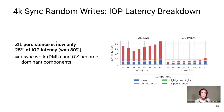Looking deeper at latency distribution, with zilpmem the ZIL persistence now only takes about 25% of wall clock time per IOPS, whereas it was about 80% with the LWB-based ZIL. This means the asynchronous parts of the ZIL — DMU and ITX work — now become the dominant components in the latency equation and need to be optimized next.